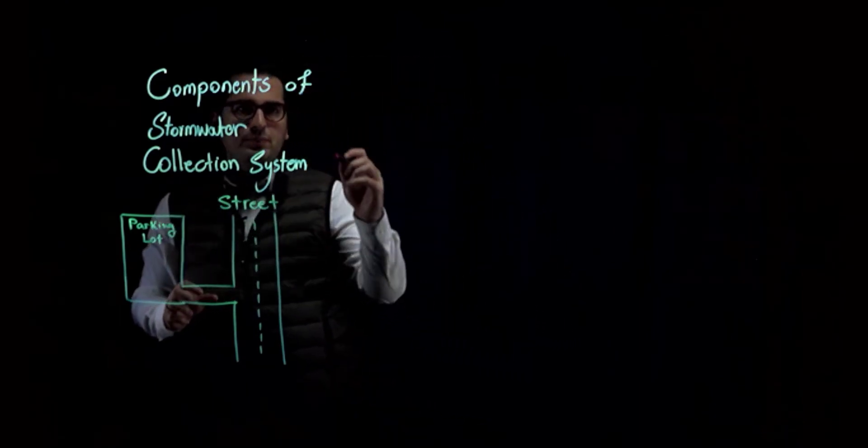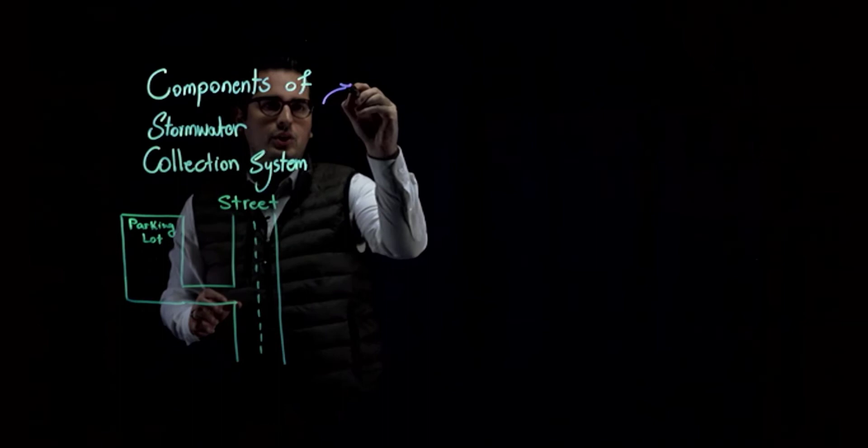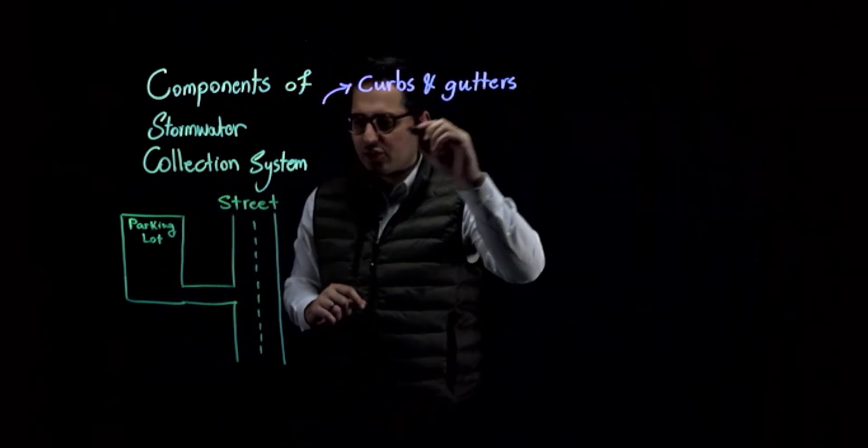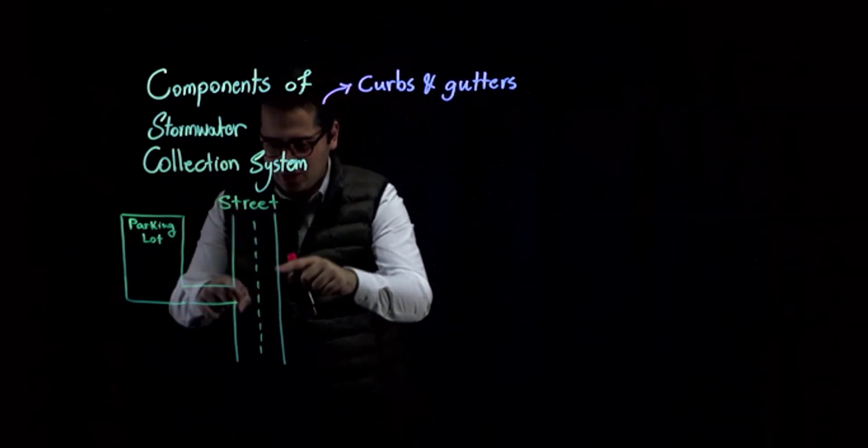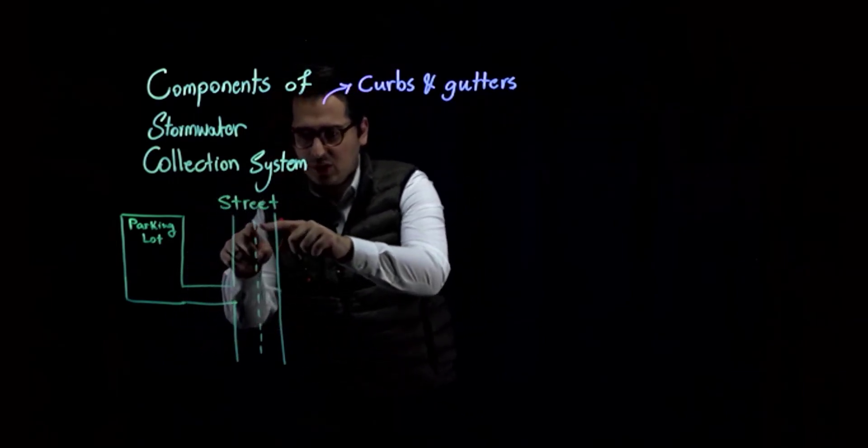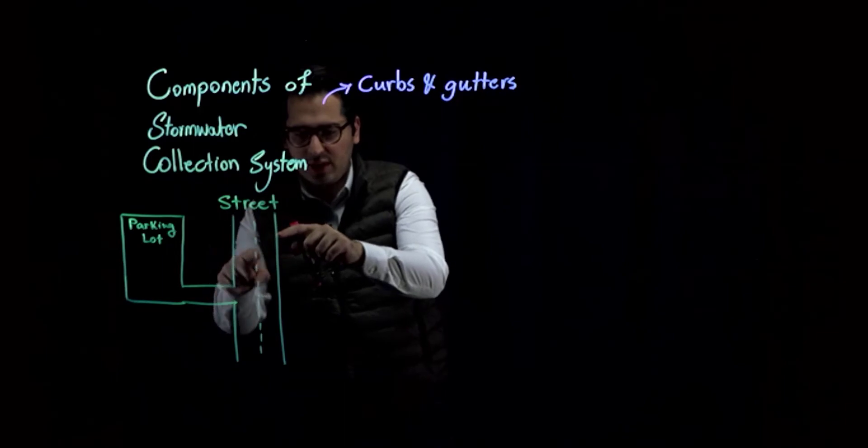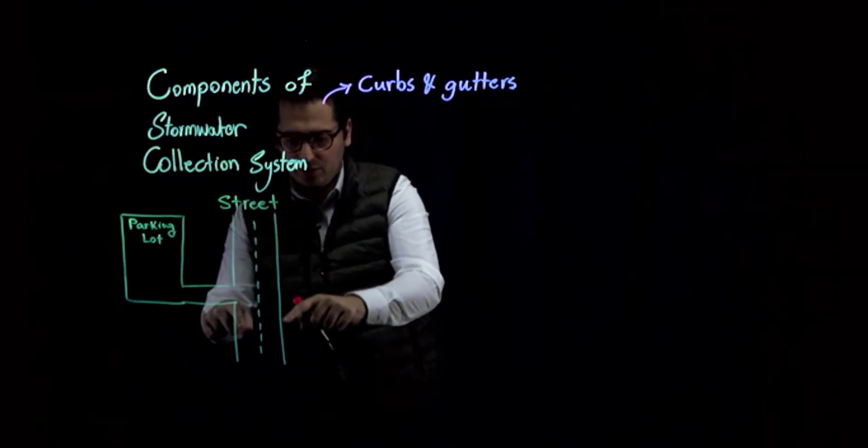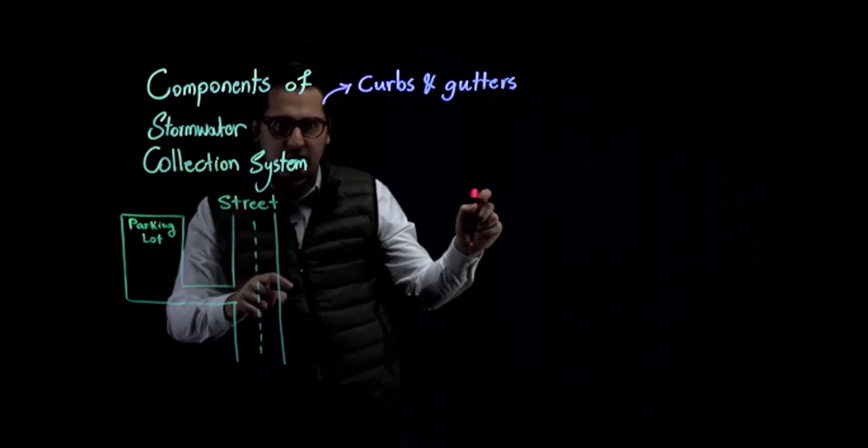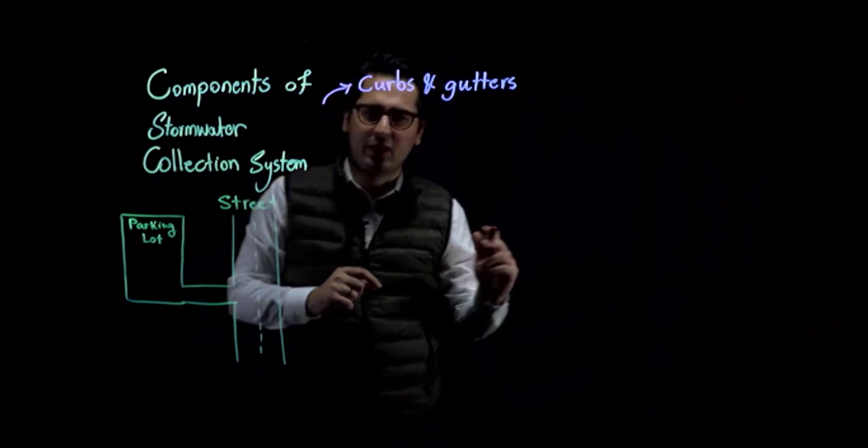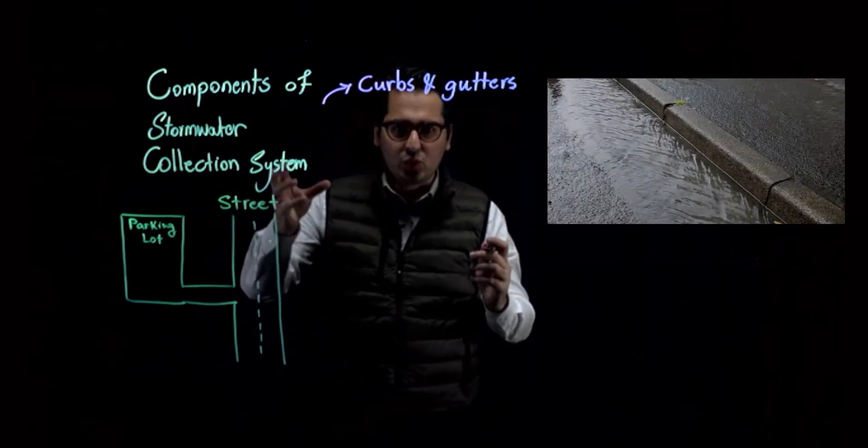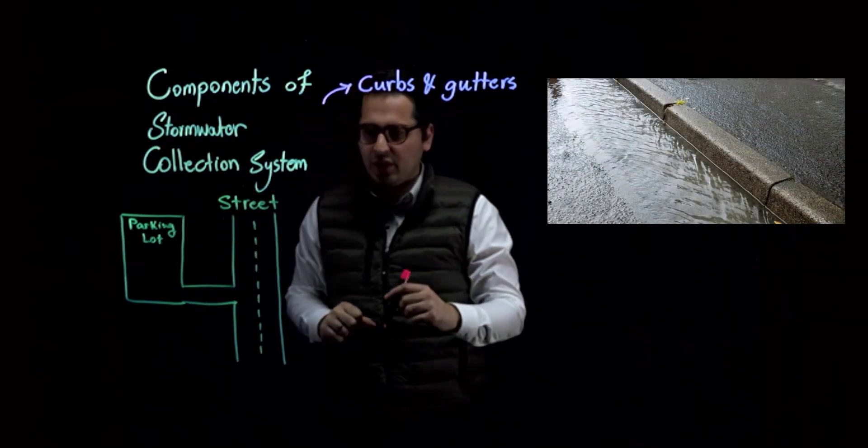And the first component that I want to talk about is the curbs and gutters. Curbs and gutters are along the edges of the street. There's a slope that moves water from the center line of your street to the edges and curbs and gutters are right over here. This is a picture of a sample curb and gutter. Essentially, there are small open channels that move water from one point to another point.